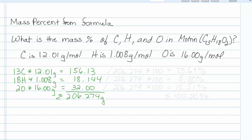Okay, the mass percent is just the mass of each element over the total times 100, so we just have to take each one of these and divide them by 206.274 and multiply by 100 to give us the percent.